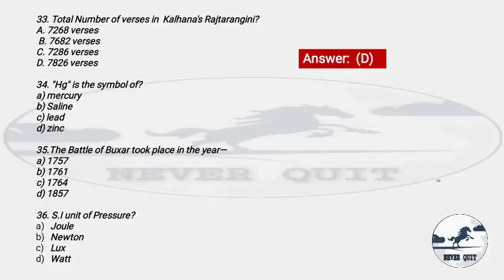Question 33: Hg is the symbol of — Options: A) Mercury, B) Saline, C) Lead, D) Zinc. The right answer is option A — Hg is the symbol of Mercury.